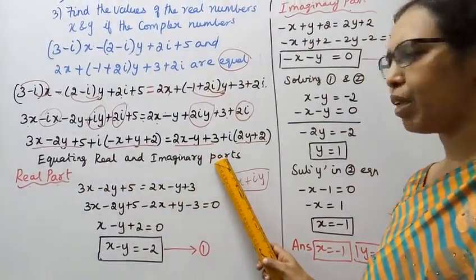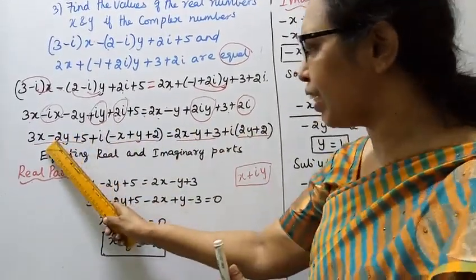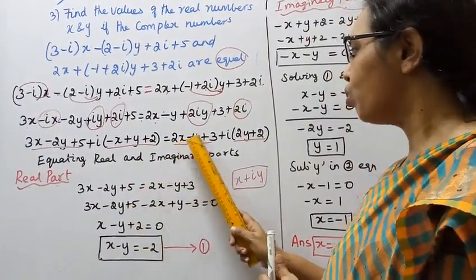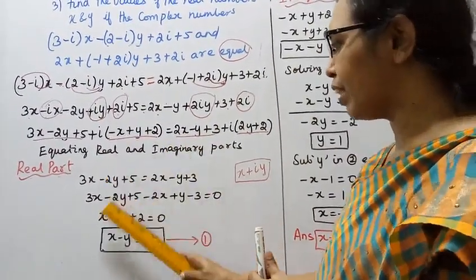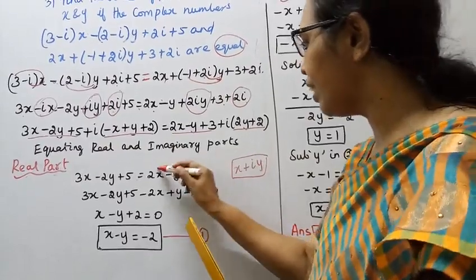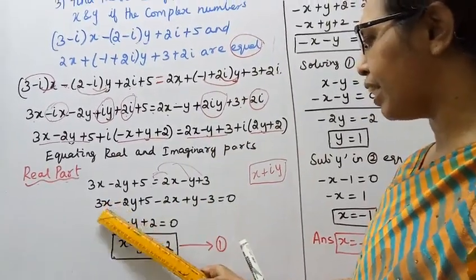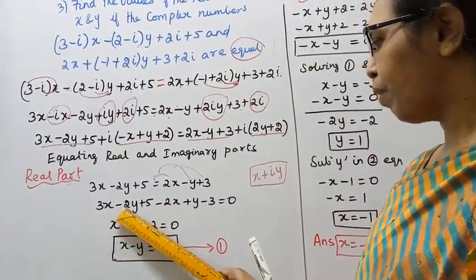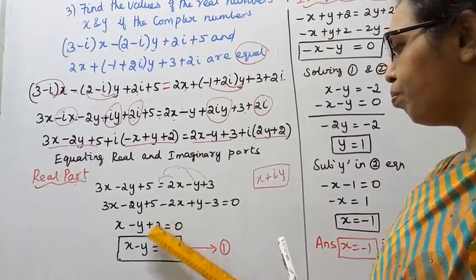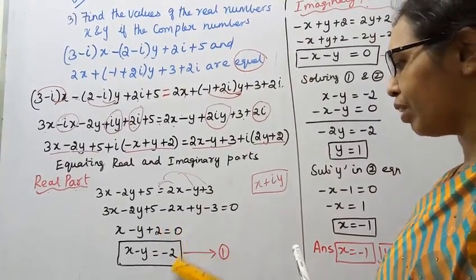Equating the real parts: 3x minus 2y plus 5 equals 2x minus y plus 3. Simplifying: 3x minus 2x minus 2y plus y plus 5 minus 3 equals 0, giving x minus y plus 2 equals 0. This is the first equation.